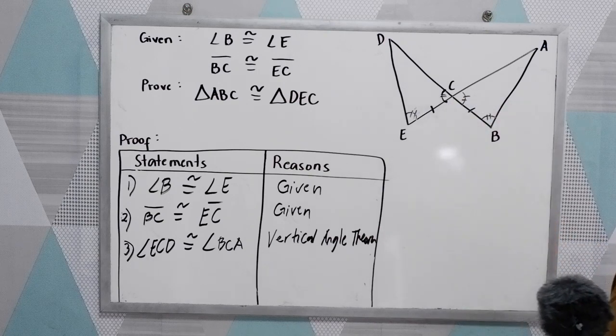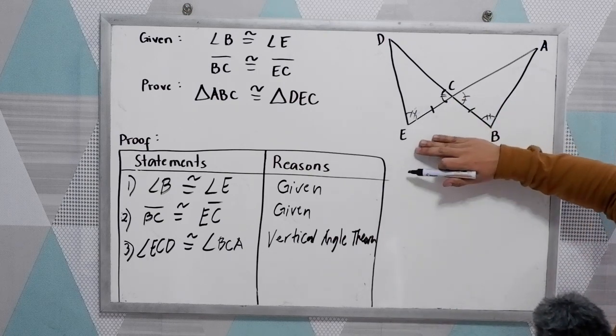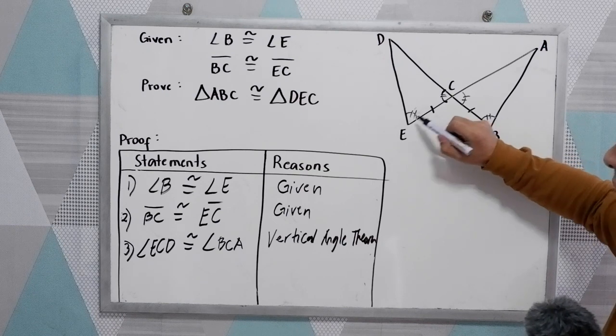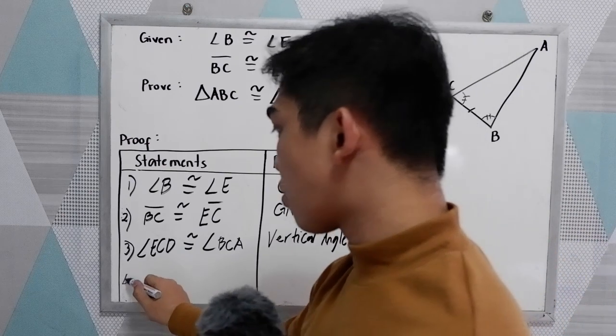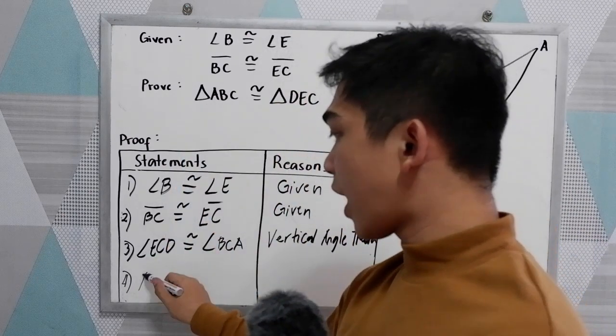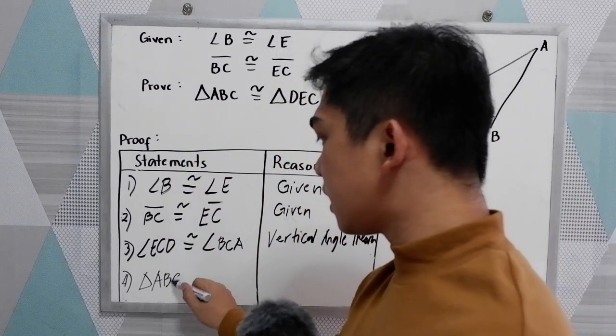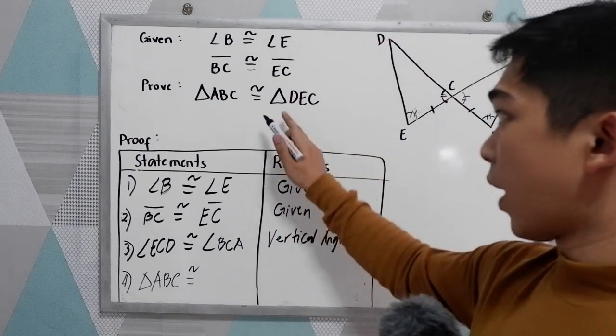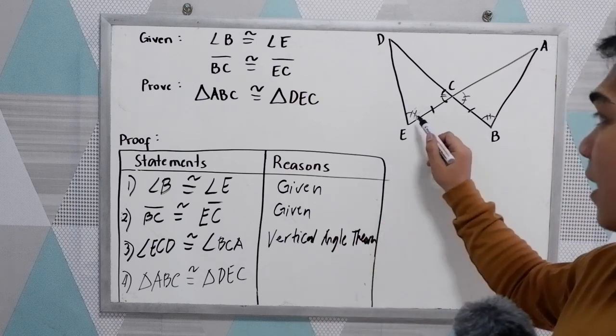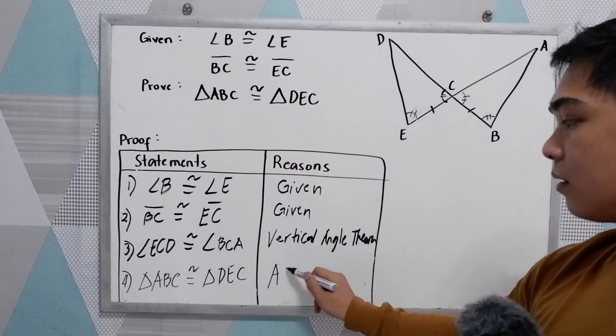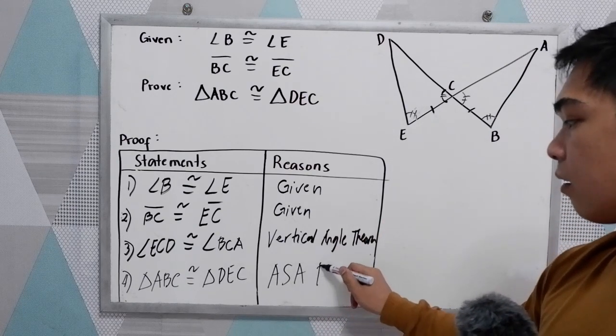Now, study our illustration. Angle, side, angle. So we can now conclude that triangle ABC is congruent to triangle DEC. That is by angle-side-angle postulate.